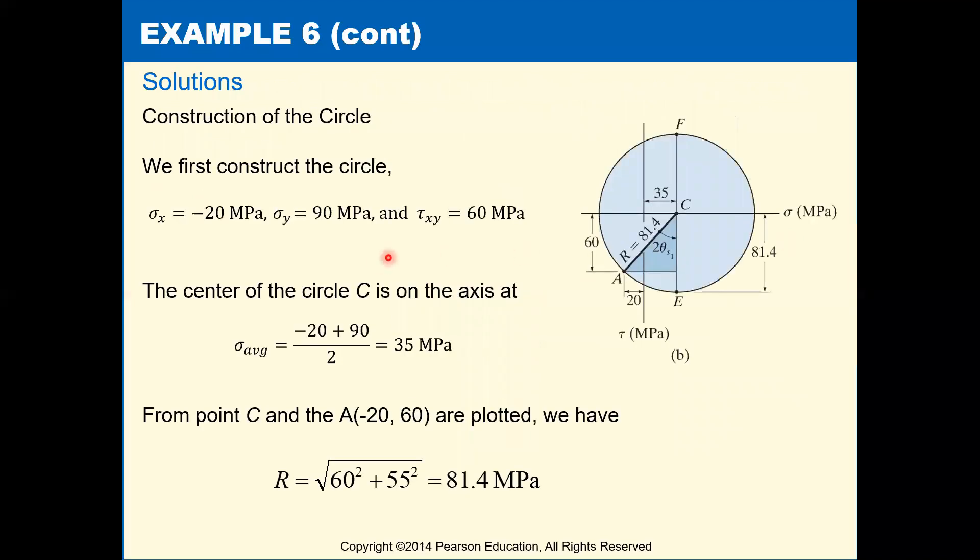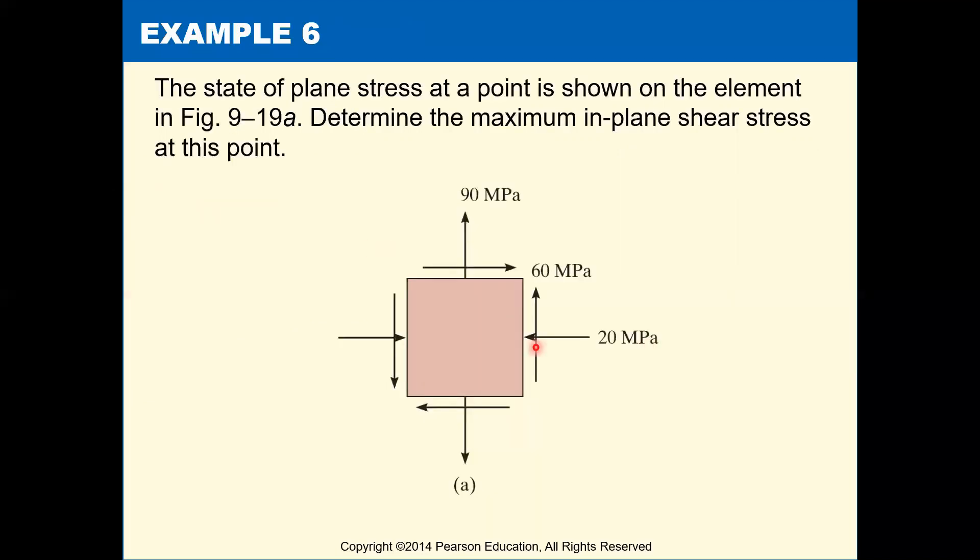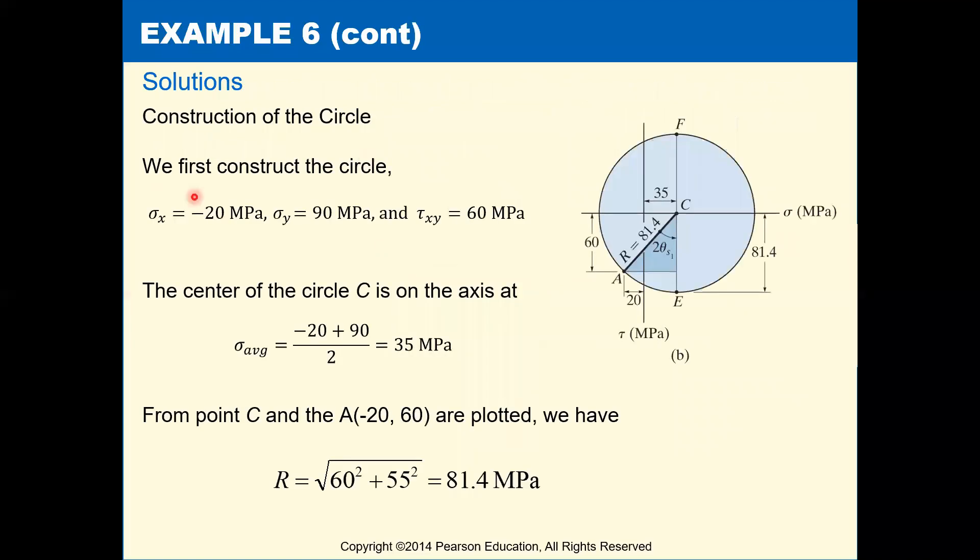So first to construct our circle, we need to digest what that element was telling us. We had a compressive 20 megapascals for sigma x, tensile sigma y of 90, and a positive tau xy of 60. So that's what we have.